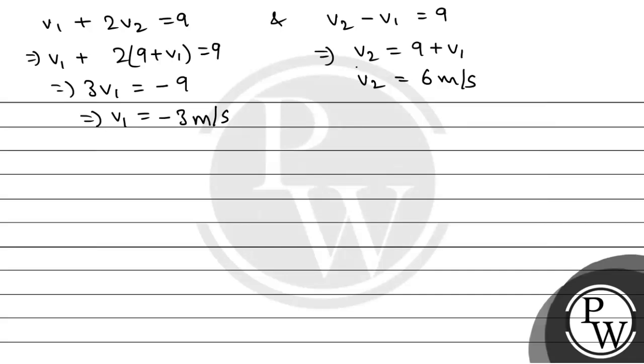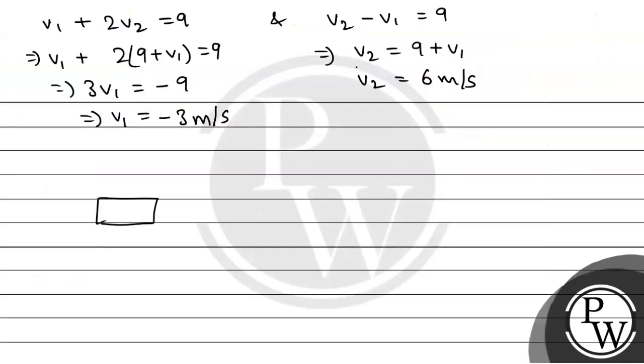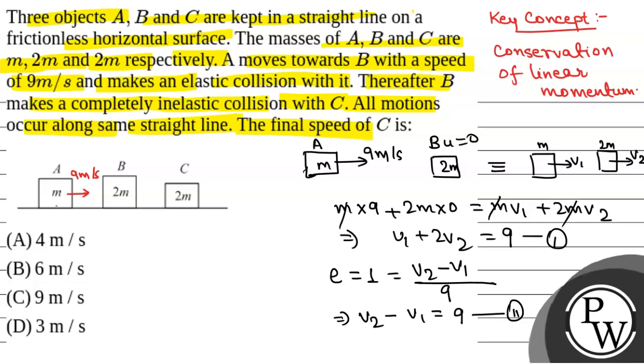Now, we have given the collision between B and C is inelastic. So 2M times 6 plus 2M times 0 equals 4M times V. Here, 12M equals 4MV, or V equals 3 meter per second.